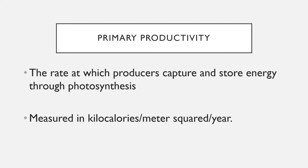So in a given year per meter squared, if I looked at all the producers in that area and measured how much energy they captured and stored — generally captured through photosynthesis and stored in glucose and then in starch — that energy per meter squared per year would be the primary productivity. That's usually measured in kilocalories.